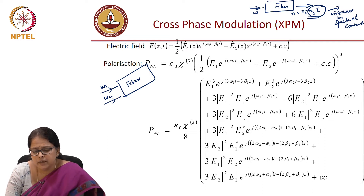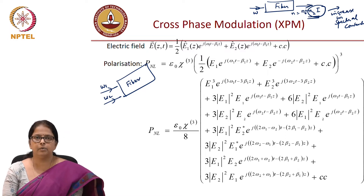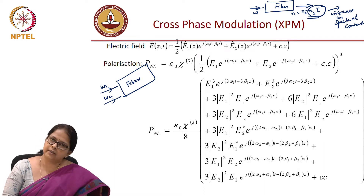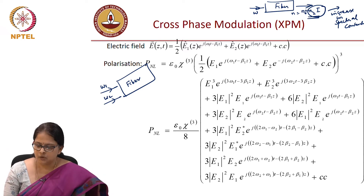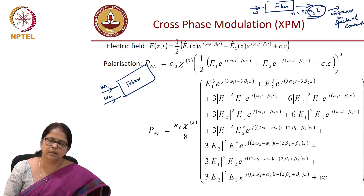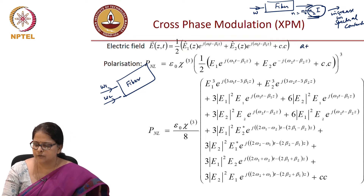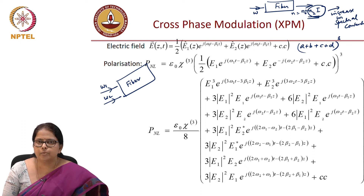The model is: the electric field is E₁(z) · e^(j(ω₁ - β₁z)) for the first field propagating, plus a second field propagating, plus the complex conjugate. The non-linear response is ½ε₀χ₃ raised to the power 3. You have terms from the expansion — it is slightly more complicated algebraically, but it is a straightforward expansion of (a + b + c + d)³. I will not derive this completely, but it is easy enough that you can work it out.